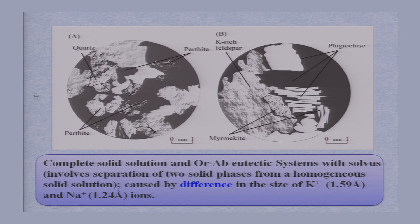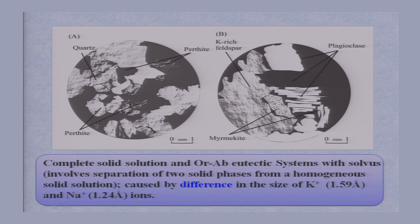In this thin section photograph taken directly from the microscope, it represents complete solid solution in the orthoclase–albite eutectic system. Orthoclase and albite are here in a eutectic relationship rather than a normal solid solution. With the solvus, it involves separation of two solid phases from a homogeneous solid solution. These two perthite phases are exsolved from other mineral phases, caused by differences in ionic size.